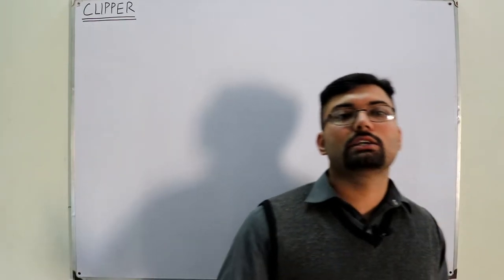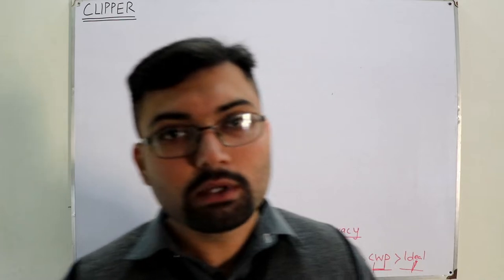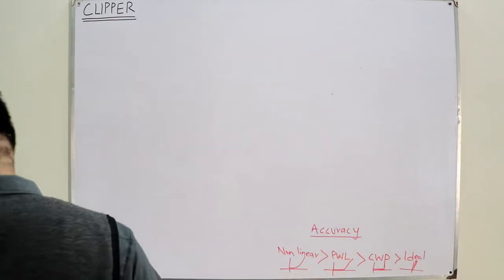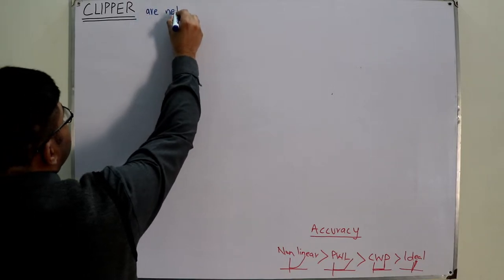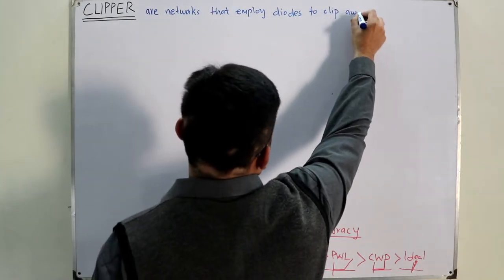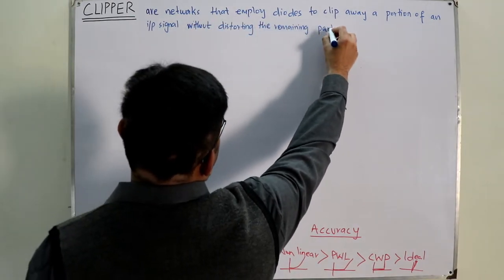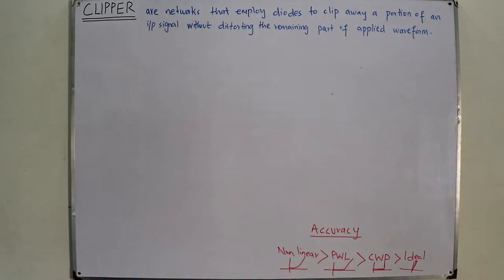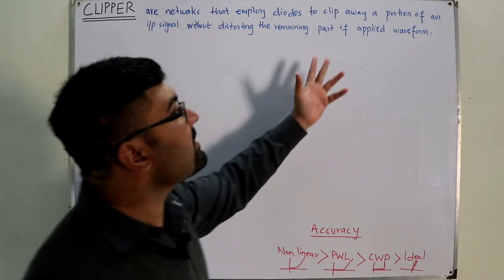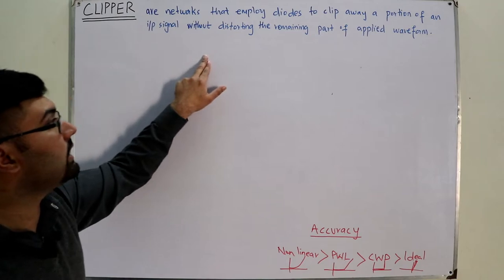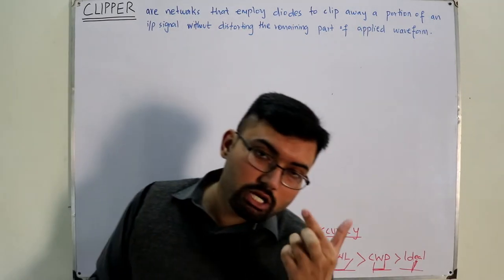Anyway, coming to today's topic — clippers. As the name suggests, it clips, meaning it removes something. What it removes is a portion of the input signal. Let us write down the definition from the book: Clippers are networks that employ diodes to clip away — to remove — a portion of an input signal in a particular portion, without distorting the remaining part of the applied waveform.